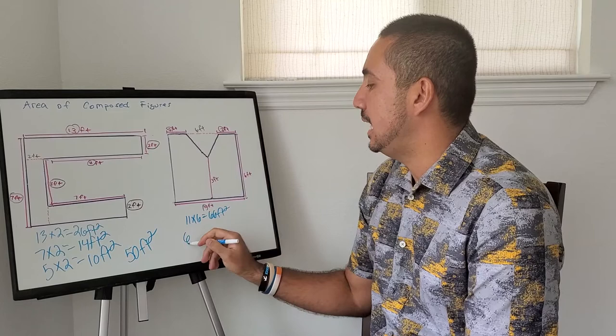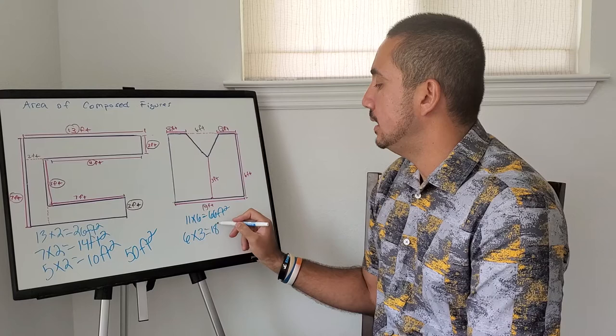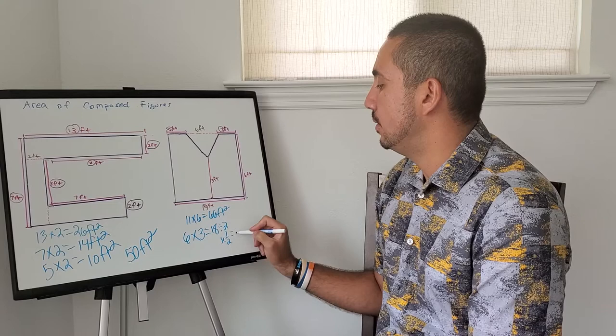That's our base times our height, 3. That equals 18. And then you're either going to divide by 2 or multiply by 1 half. Both of those equal 9 feet square.